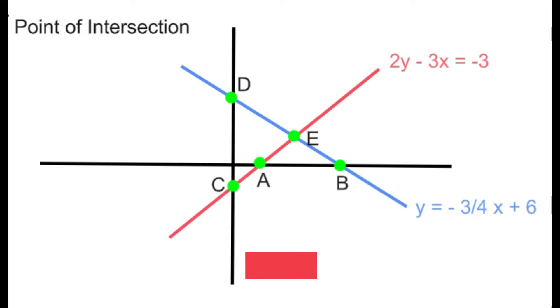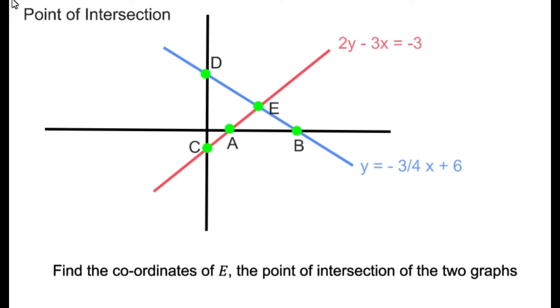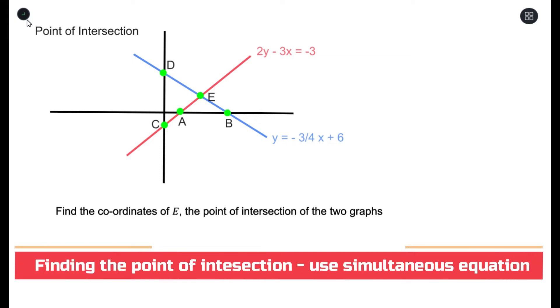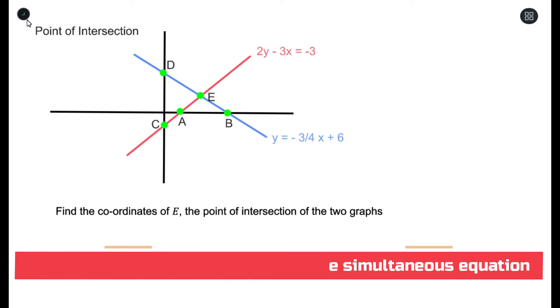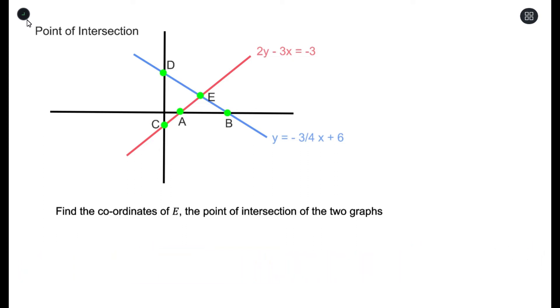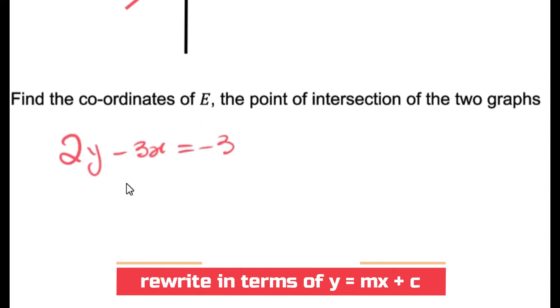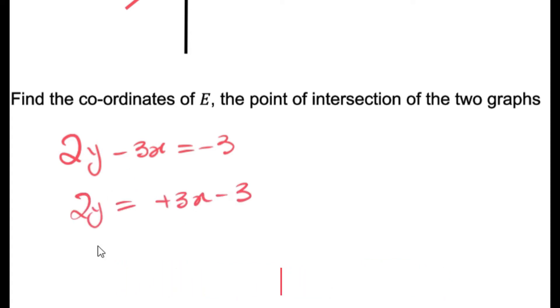So how do we use this in a question? That's exactly what we're going to do next. This question says: find the coordinate of E, the point of intersection of two graphs. To calculate the point of intersection, you need to use simultaneous equations — take the first equation and substitute it into the second, or equate both equations. I'm going to rewrite this equation as a standard straight line equation, which is Y equals MX plus C. Take this as equation one.